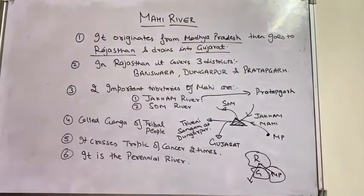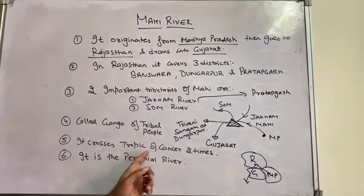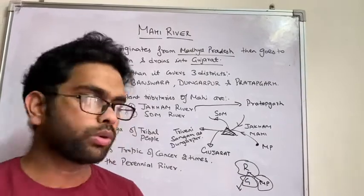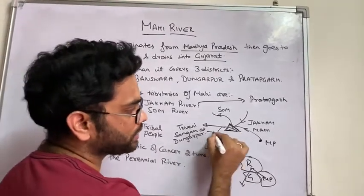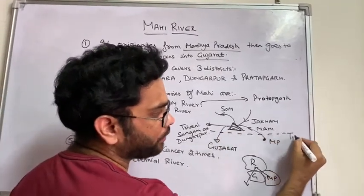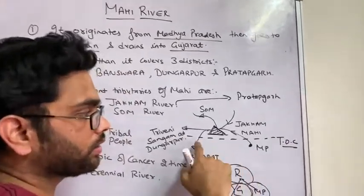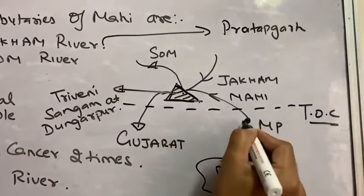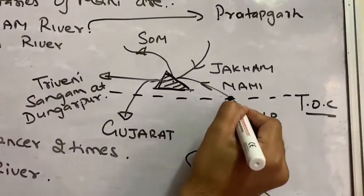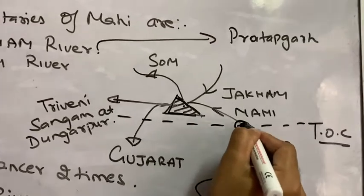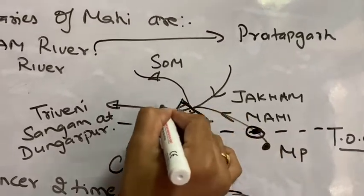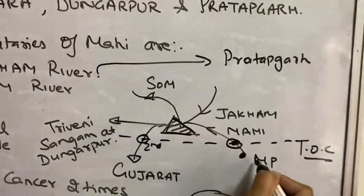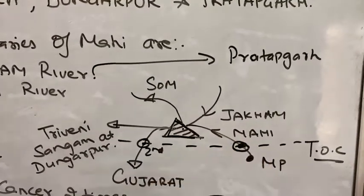It is important to note that the Tropic of Cancer passes through the state of Rajasthan. The Mahi river crosses the Tropic of Cancer two times — once in Rajasthan, and a second time when it enters Gujarat. This is a very important point for exams.